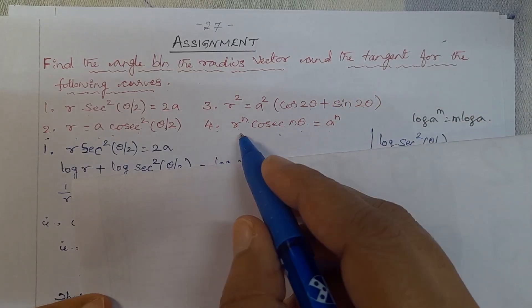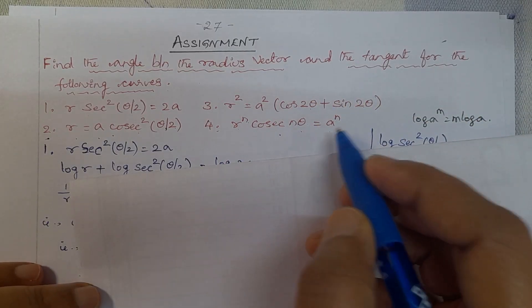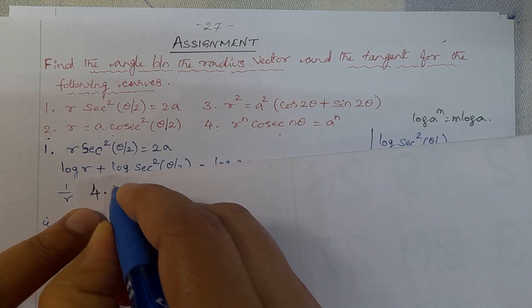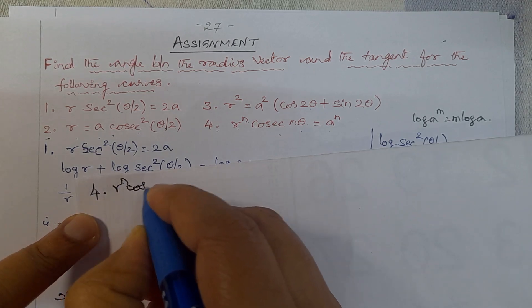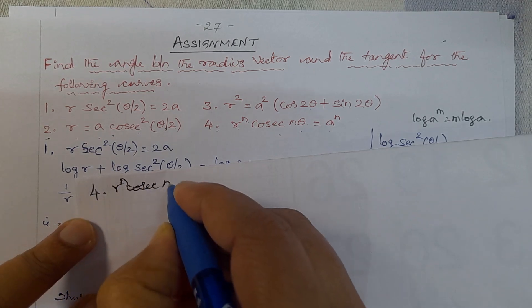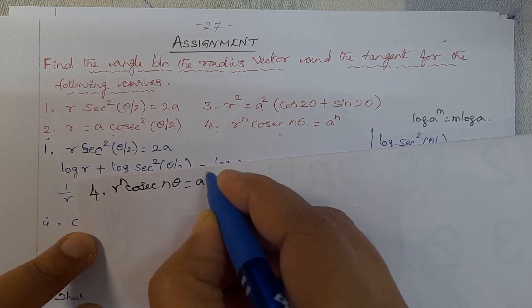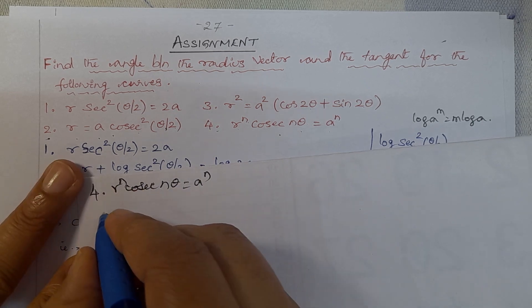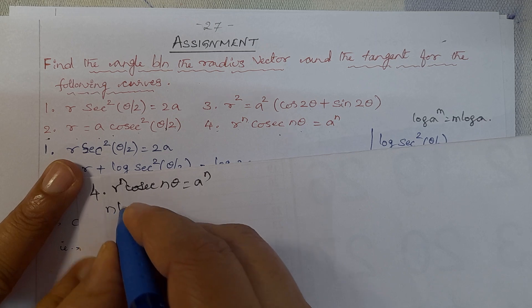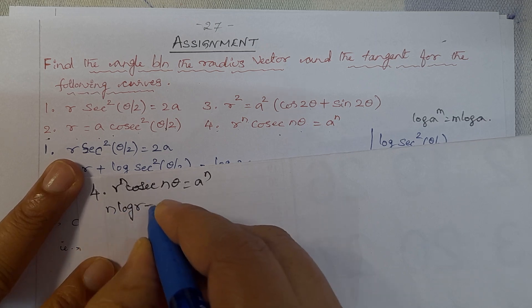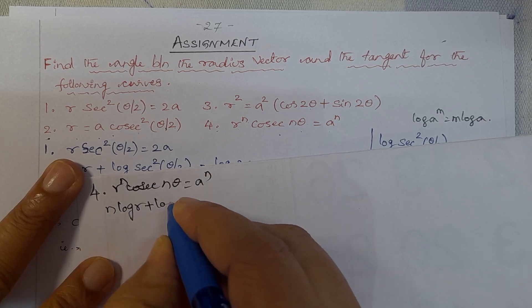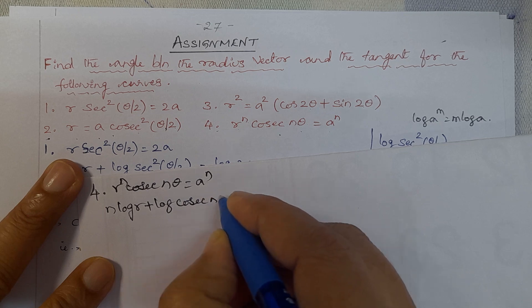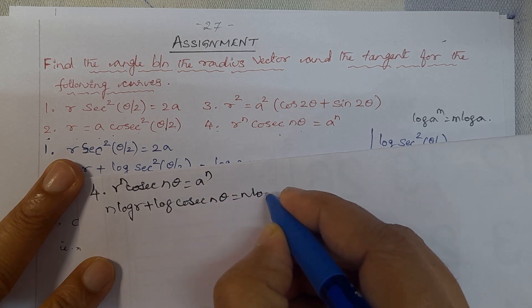Fourth problem: Rⁿ·cosecⁿ(nθ) = aⁿ. Taking log on both sides: n·log R + log(cosec(nθ)) = n·log a.